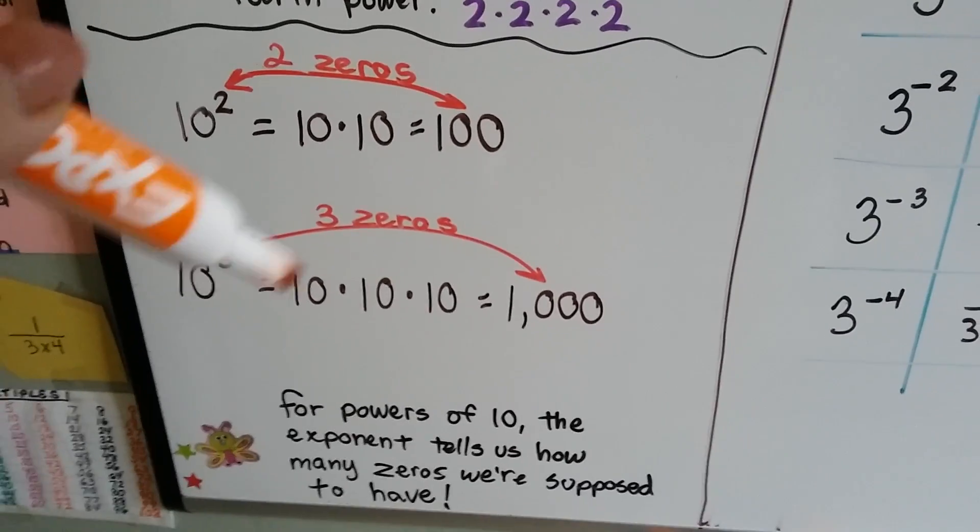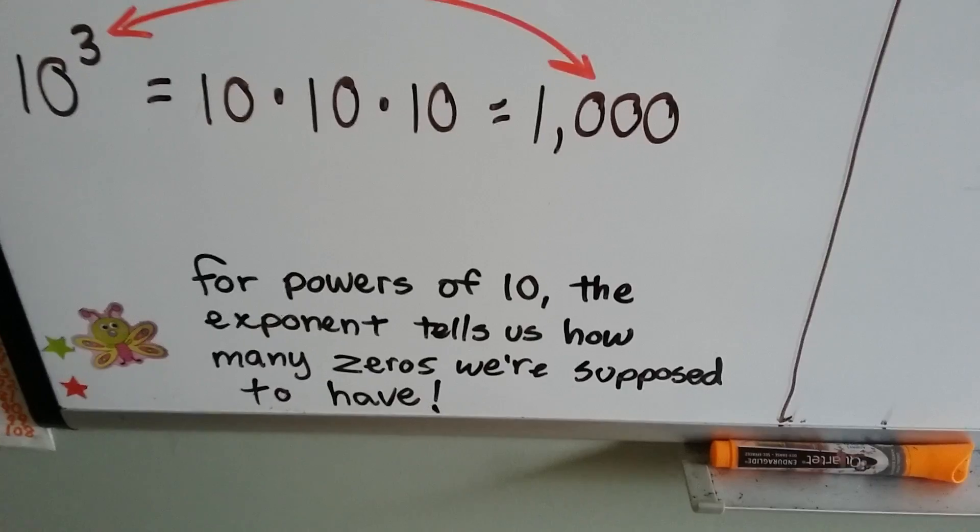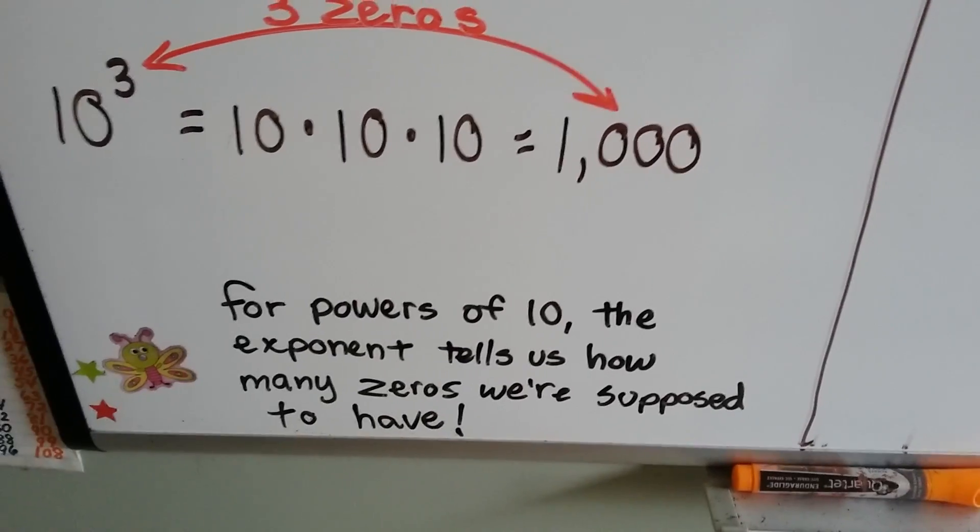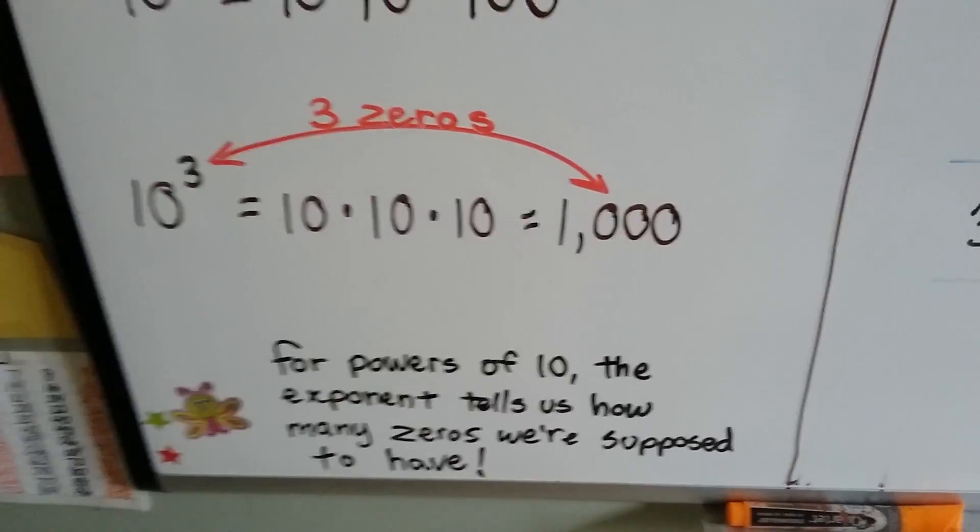10 to the third power means 10 times 10 times 10. There's 3 zeros in the answer. So for powers of 10, the exponent tells us how many zeros we're supposed to have. If it was 10 to the seventh power, we'd have 7 zeros in that answer.